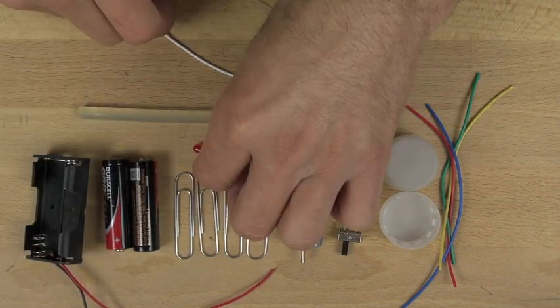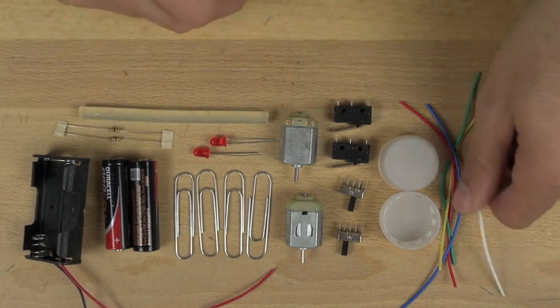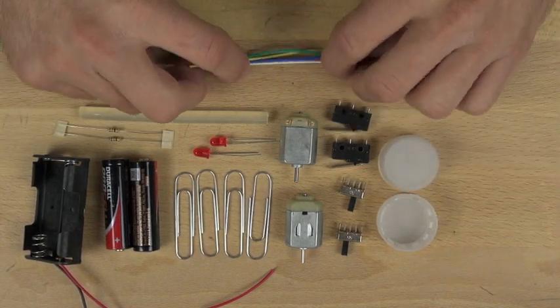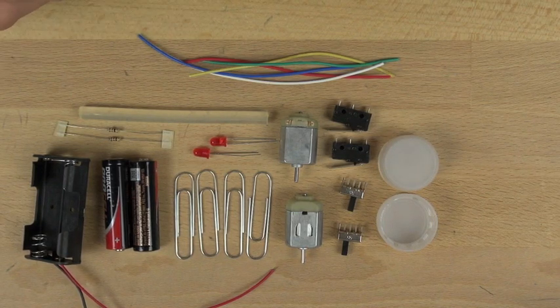And some hot glue, two LEDs, and two resistors. You want to make sure you pick the resistors that fit with those LEDs. I believe those are under 60 ohm, and then we have five multicolored wires.